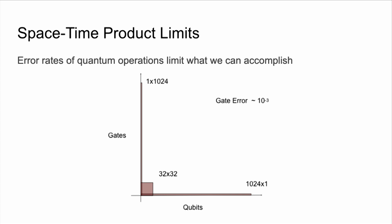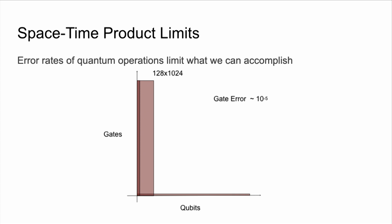In the near term, we expect device errors to be pretty significant, on the order of 10^-3 to 10^-5. These error rates are really limiting in what we can accomplish. In the news we usually hear about how many qubits we have, but the error rate is actually really significant in how many operations we can do. Looking at the space-time product — the number of qubits times the number of operations per qubit — we can either do maybe 1,024 operations on a single qubit, or one operation on 1,024 qubits, or anywhere in between, such as 32 operations on 32 qubits. If we lower the error rate to 10^-5 — 100 times better than 10^-3 — then we can get a lot more operations on a lot more qubits, increasing the quantum volume and thus more we can do with our quantum machine.